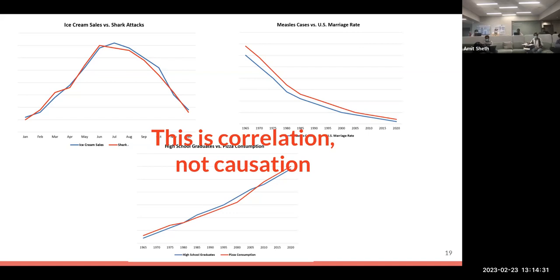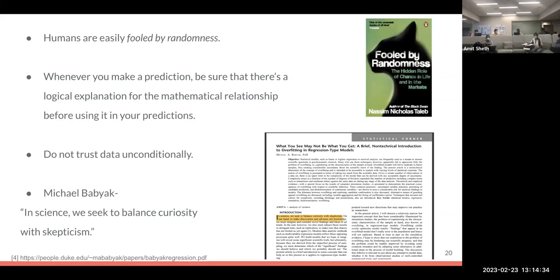The problem here is that humans are easily fooled by the concept named randomness. There's another book called 'Fooled by Randomness' that this book mentions. If you have interest in this concept you can read it. He says that whenever we make a prediction, we should be sure that there's a logical explanation for the mathematical relationship that we are using in the model before we use it in our predictions. He says do not trust data unconditionally.